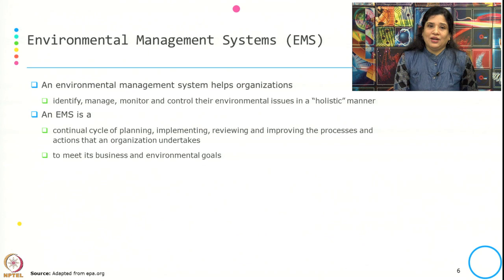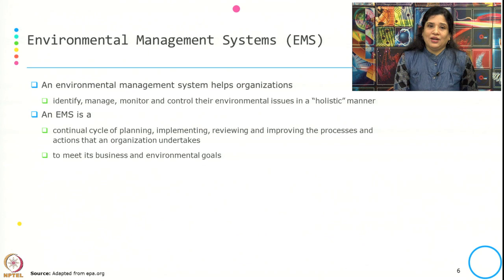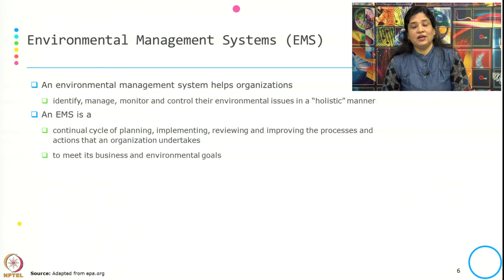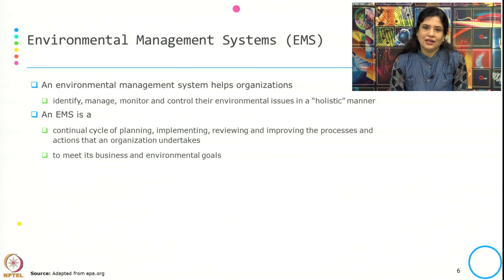Now, what is an environmental management system? An environmental management system helps an organization identify, manage, monitor, and control its environmental issues in a holistic manner. It is a continual cycle of planning, implementing, reviewing, and improving the processes and actions that an organization undertakes to meet its business and environmental goals.